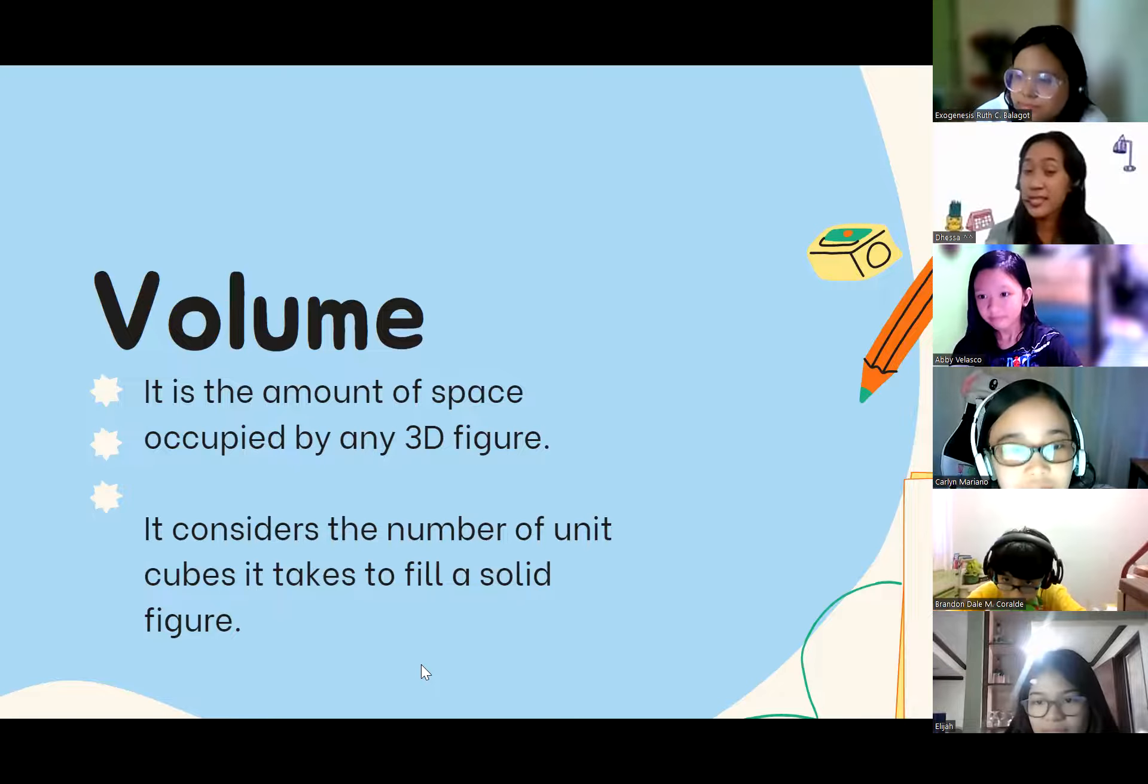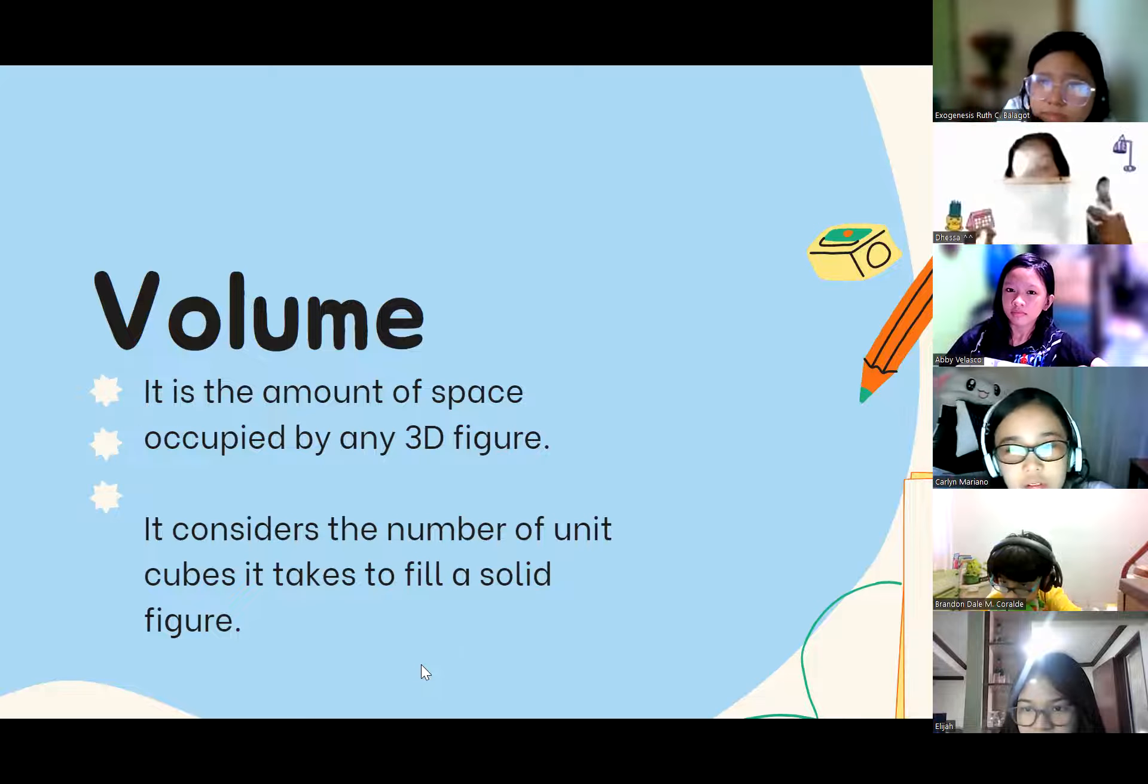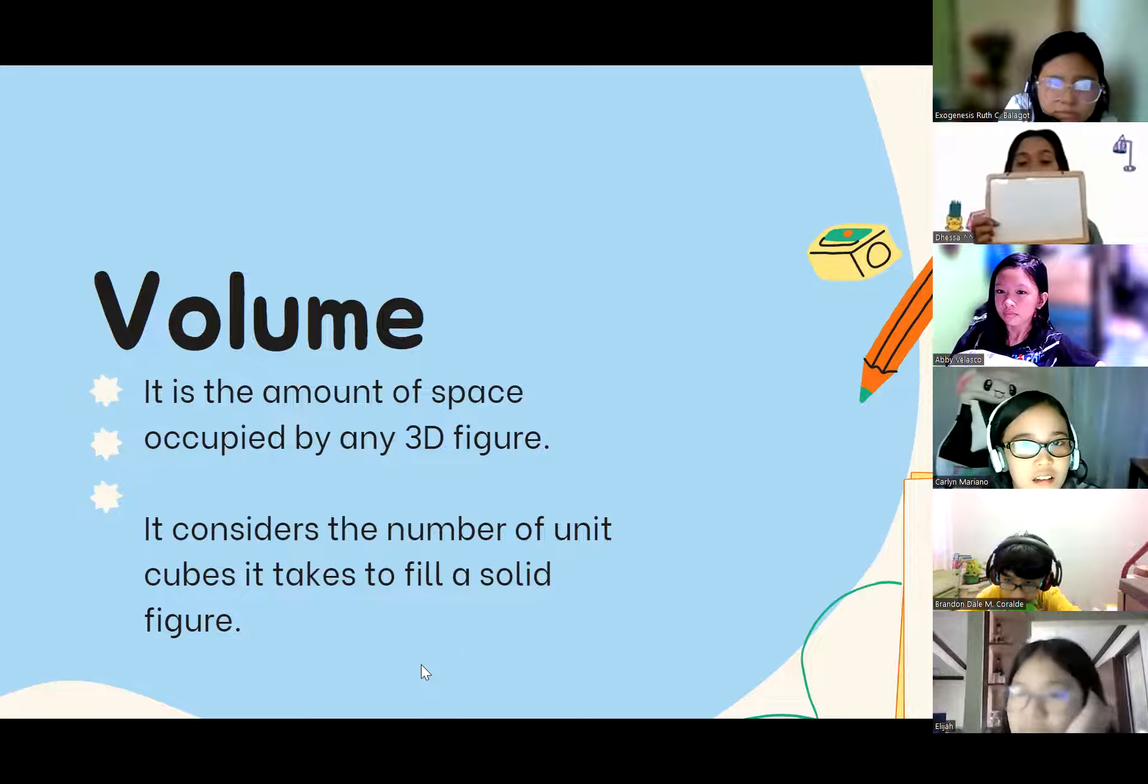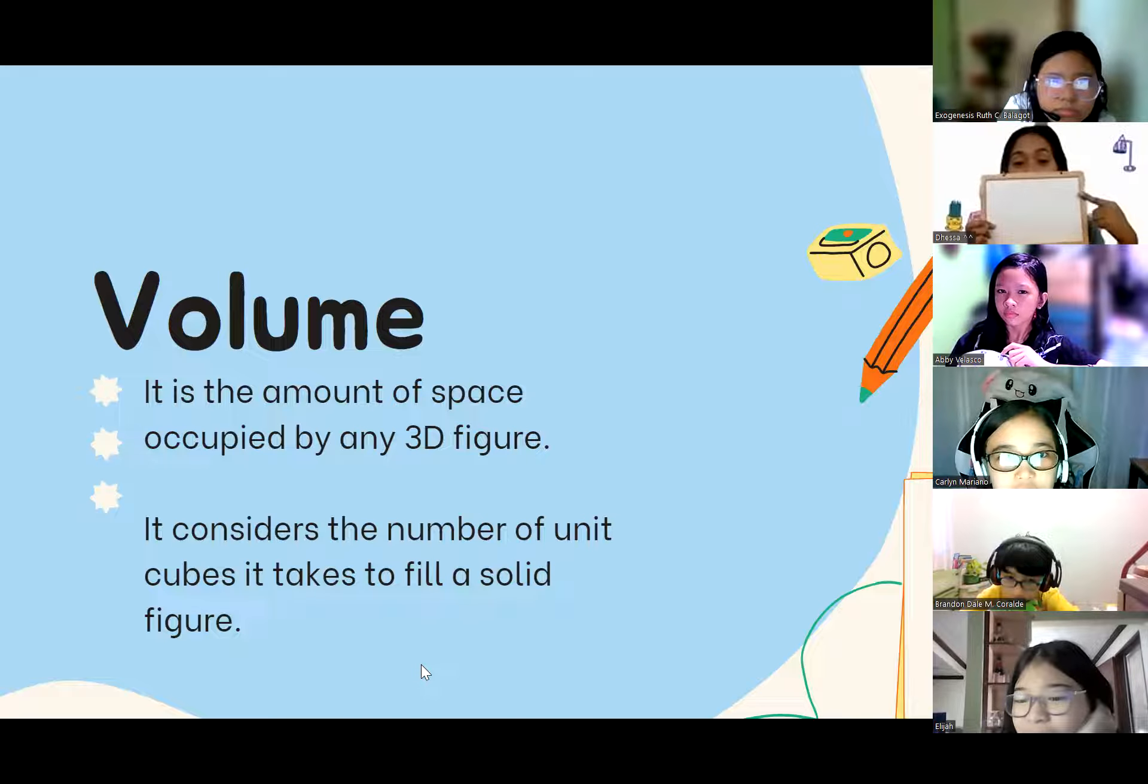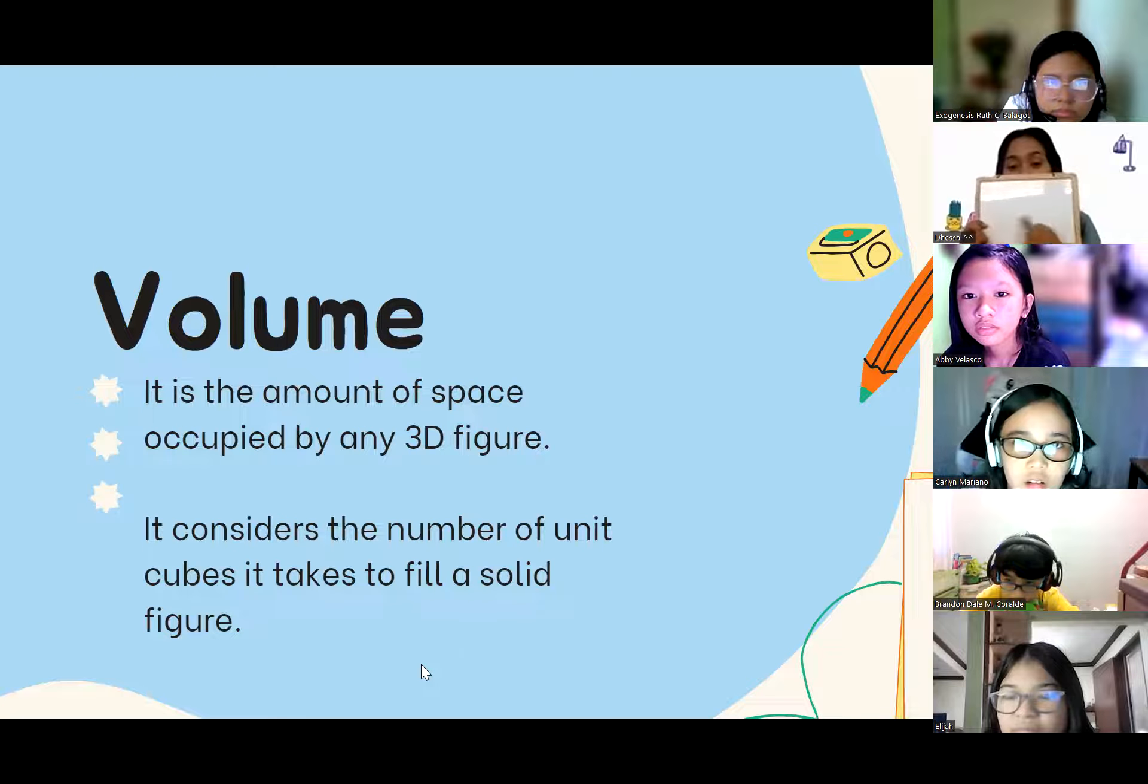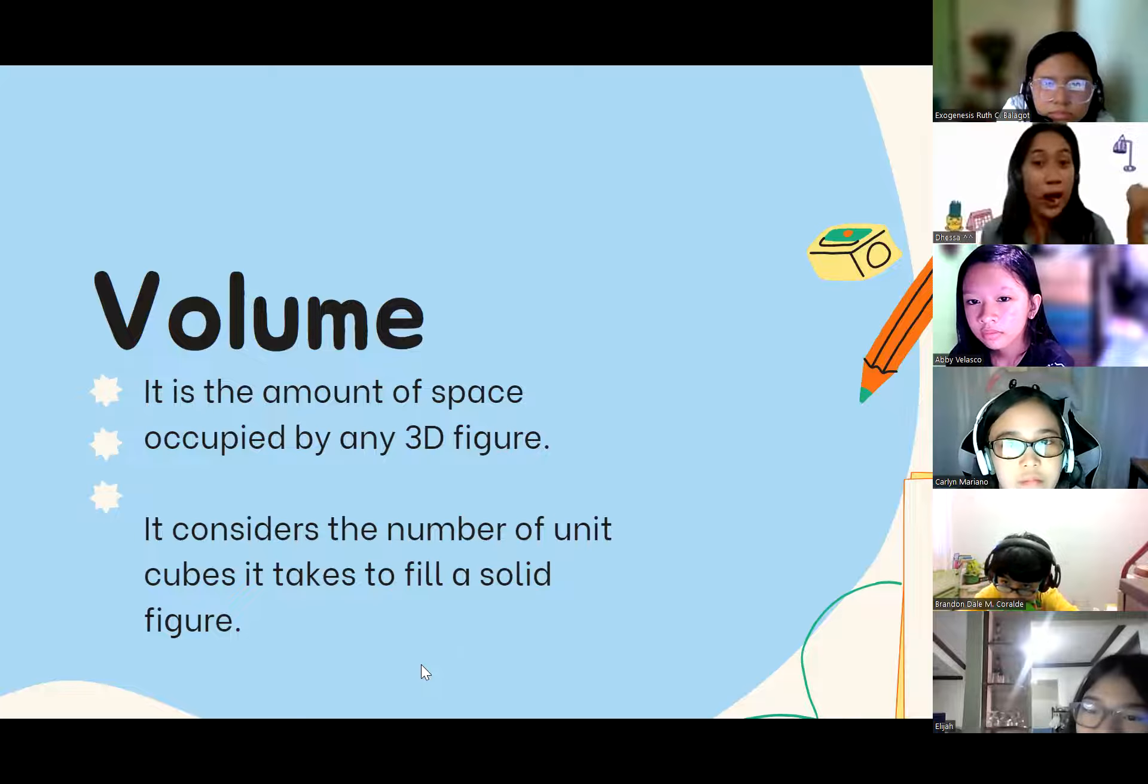For the area. For example, this is a rectangle, right? Rectangle. So, for example, this one is 3 centimeters. And then we have 5 centimeters. So, 5 times 3 is 15 centimeters squared. It means that there are 15 squares here. Okay? 5. 1, 2, 3, 4, 5. Then 3 rows. 1, 2, 3. There are 3 fives. So, 15 squares. Now, how about for the volume?